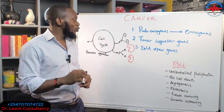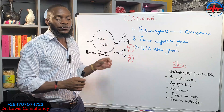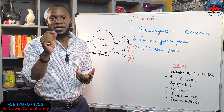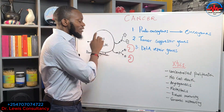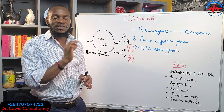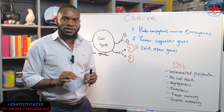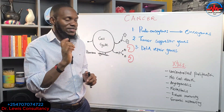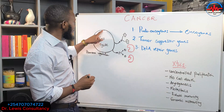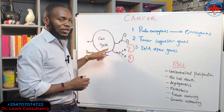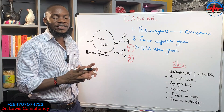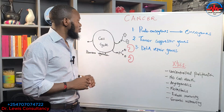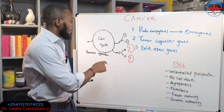Before those cells are released from the cell cycle, they must have differentiated for different functions. However, there are cells that evade this cell cycle every single day. And when they evade, they can start to misbehave — and that's where cancer comes in. The cell must go through this cycle to completion, get its appropriate differentiation, and then be released to do different functions.